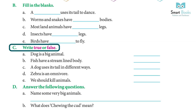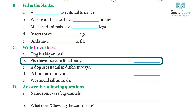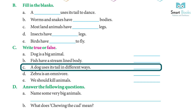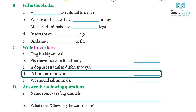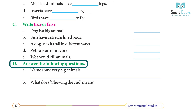True or false. A) A dog is a big animal — false. B) A fish has a streamlined body — true. C) A dog uses its tail in different ways — true. D) A zebra is an omnivore — false. E) We should kill animals — false.